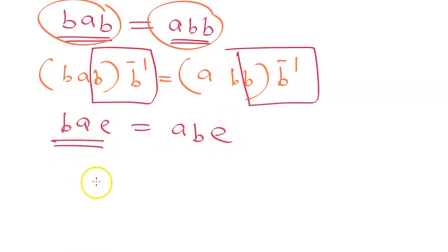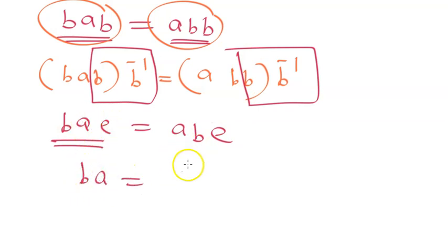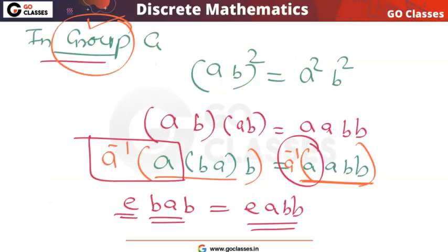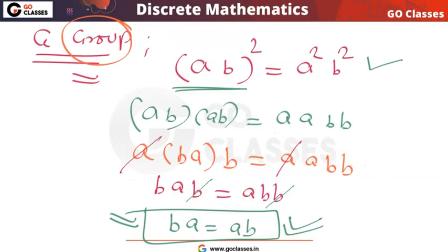ba·e is nothing but ba, and ab·e is nothing but ab. So finally we get ba = ab. Therefore, this group is abelian.